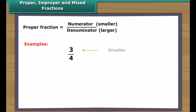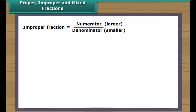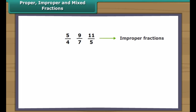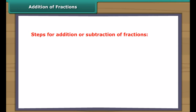For example, three-fourths, two-fifths, and seven-ninths are proper fractions. In an improper fraction, the numerator is greater than the denominator — for example, five-fourths, nine-sevenths, and eleven-fifths. Improper fractions can be written as a combination of a whole number and a proper fraction, so these become one and one-fourth, one and two-sevenths, and two and one-fifth respectively. Such fractions are called mixed fractions.